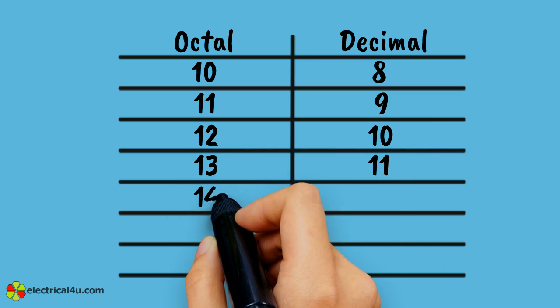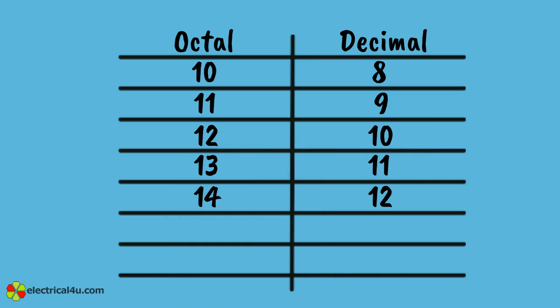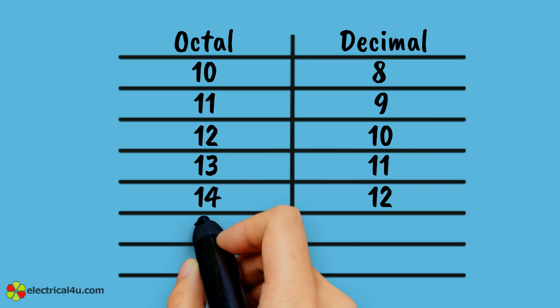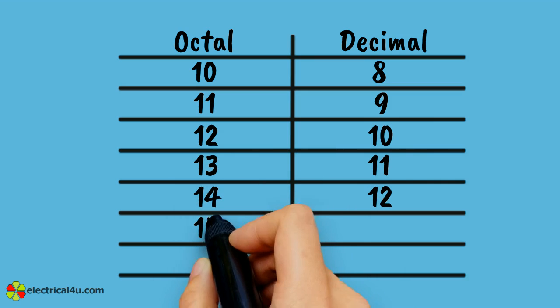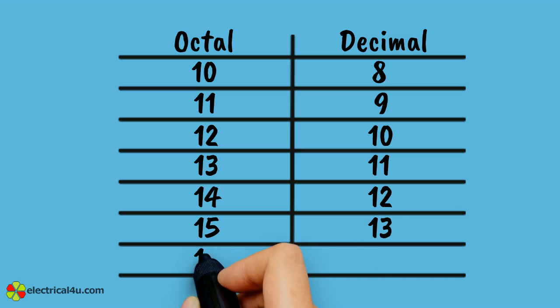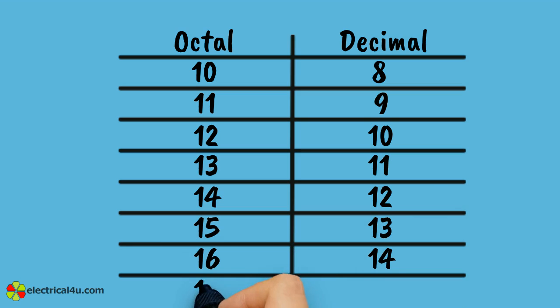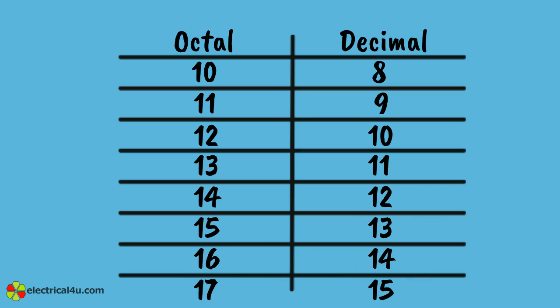Octal 14 is equivalent to decimal 12, octal 15 is equivalent to decimal 13, octal 16 is equivalent to decimal 14, octal 17 is equivalent to decimal 15, and so on.